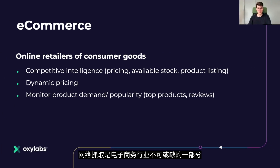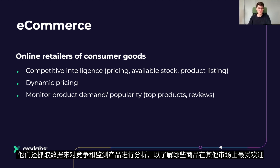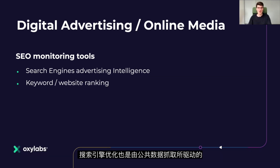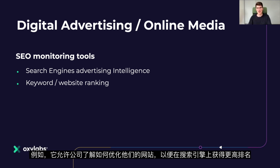What companies use web scraping? Web scraping is an inseparable part of the e-commerce industry. E-commerce businesses gather public data for pricing intelligence, which involves tracking, monitoring, and analyzing pricing data to understand the market and make pricing changes in real time. They also scrape data to analyze the competition and monitor products to see what items are most popular in other marketplaces. Search engine optimization is also driven by public data scraping. Public data from search engines helps generate insights for website optimization — for example, it allows companies to see how their website could be optimized to rank higher on search engines.